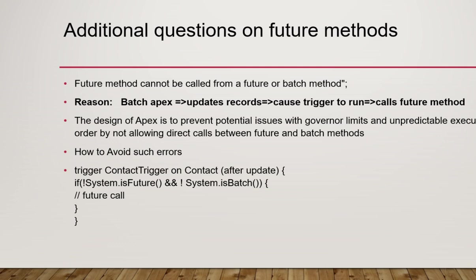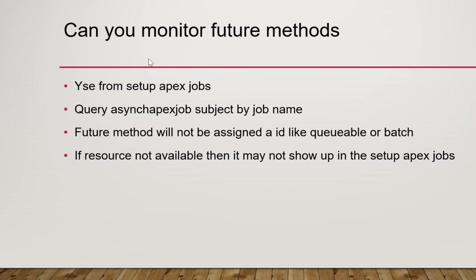How do you monitor future methods? You can look at Apex Jobs in Setup, and you can also query the AsyncApexJob object. Note that a future method is not assigned an ID like other async Apex types, and sometimes it may not appear in Apex Jobs — because if resources like memory are unavailable, the future method will not run and may not show up.